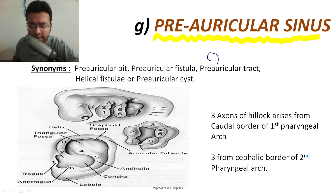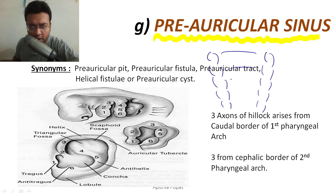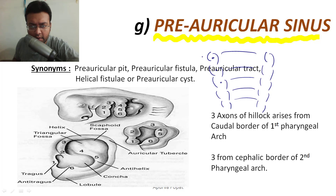There are six pharyngeal arches, and out of these six, the first and second pharyngeal arches are very important for the development of the ear. These are the individual arches — first, second, and third — and the depression between the first and second arch on the outside is called the first pharyngeal cleft.